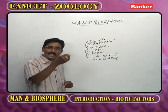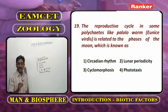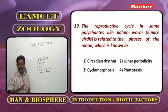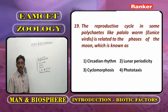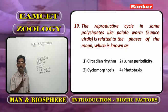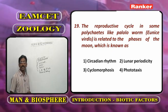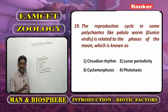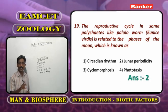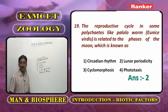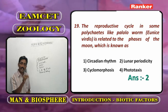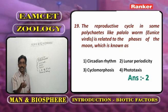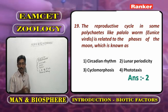This is an example of lunar periodicity, concerned with different phases of the moon. Lunar periodicity is an example of circadian rhythm. If both circadian rhythm and lunar periodicity appear as options, choose lunar periodicity first; if lunar periodicity is absent, choose circadian rhythm.